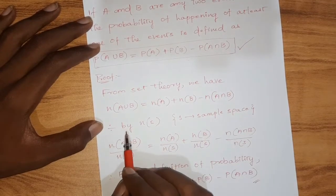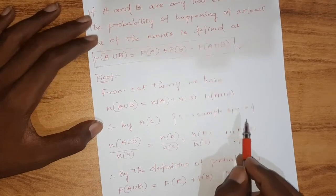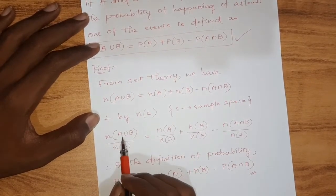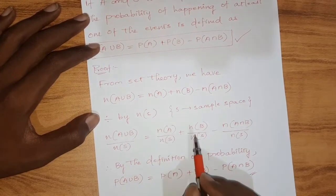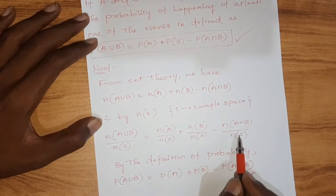Let us divide this equation by N of S. So here S indicates sample space. After dividing by N of S, we will get the equation that N of A union B by N of S equals N of A by N of S plus N of B by N of S minus N of A intersection B by N of S.